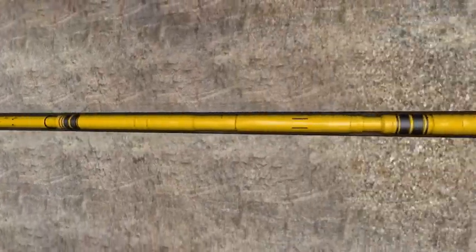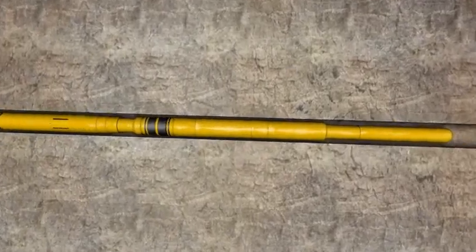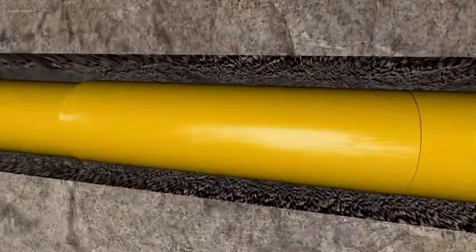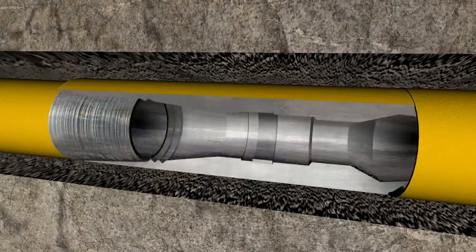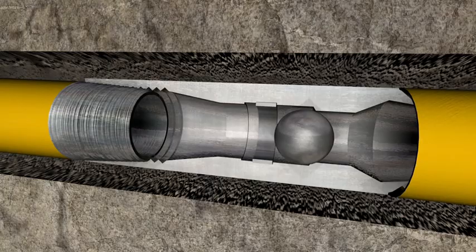The FracPoint system is run in the well in the open position, allowing the liner to fill up with well fluid. The sleeves are in the closed position. Upon reaching the desired depth with the completion liner, the first ball is deployed and will seat in the ball seat sub.